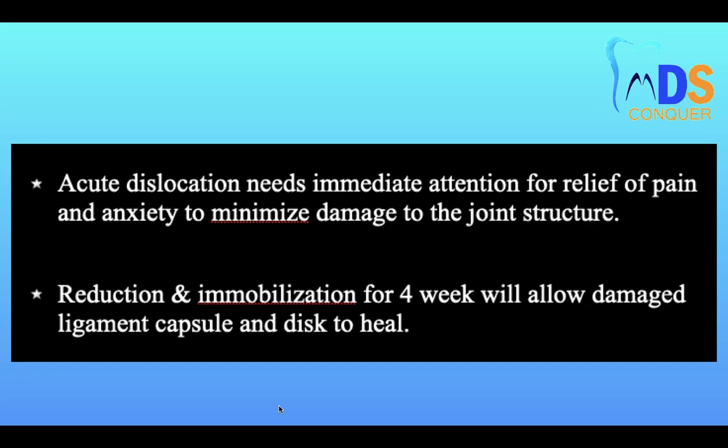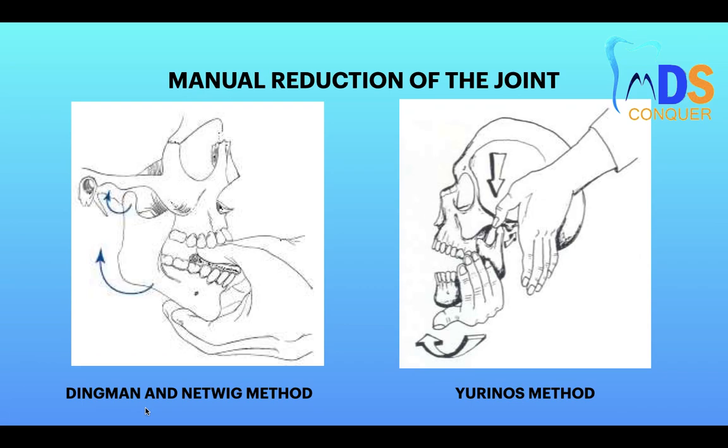In case of acute dislocation, it requires immediate attention for relief of pain and anxiety, to minimize damage to the joint structures. Reduction and immobilization for four weeks will allow the damaged ligaments, capsules, and discs to heal. Manual reduction of the joint can be done with two methods: the Dingman and Natuwick method and the Urinose method.